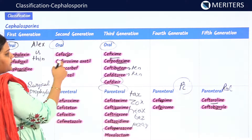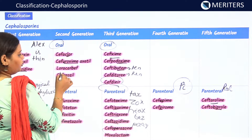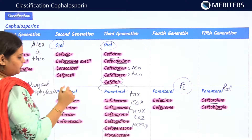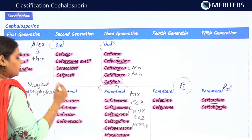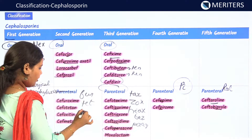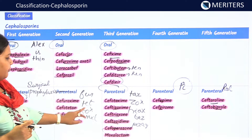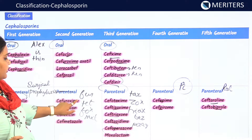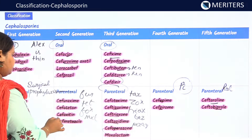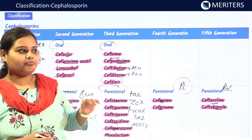For second generation oral drugs: cefaclor — this is asked many times in exams; cefuroxime axetil; loracarbef; and cefprozil. For second generation parenteral, remember the rhyming cluster: 'for-fox-tet-met' — cefuroxime, cefotetan, cefoxitin, and cefmetazole.